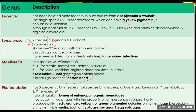Photorhabdus has three species. Quite interesting is that the natural habitat is the lumen of entomopathogenic nematodes. They occur in two phases, with the property of luminescence in phase one only. These organisms produce pink, red, orange, yellow, and green pigmented colonies on nutrient agar and especially on nutrient-rich media such as TSA (trypticase soy agar) and egg yolk agar.